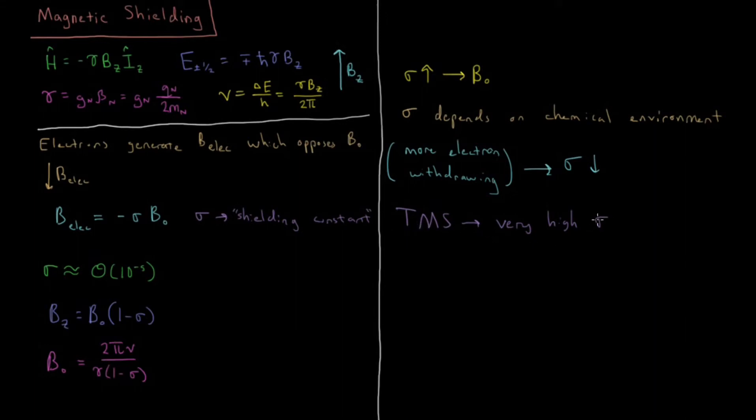Now that we've defined this value of sigma, this shielding constant, we can define a quantity called the chemical shift as well, which we're going to look at in the next video. This is indicated by the lowercase Greek symbol delta. And delta as I said is called the chemical shift. We're going to see in the next video how delta and sigma are related to one another.